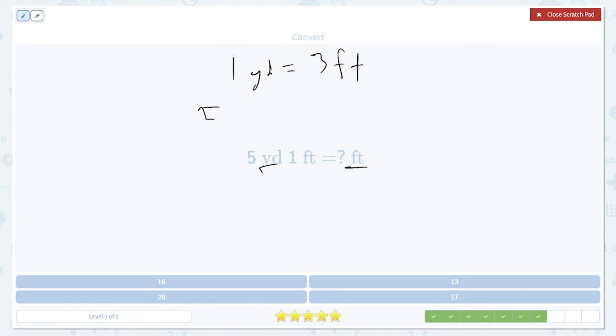5 yards times 3 feet is 15 feet. So that's this part, 15 feet. And then one additional foot because there's one extra foot. So that gives us a total of 16 feet.